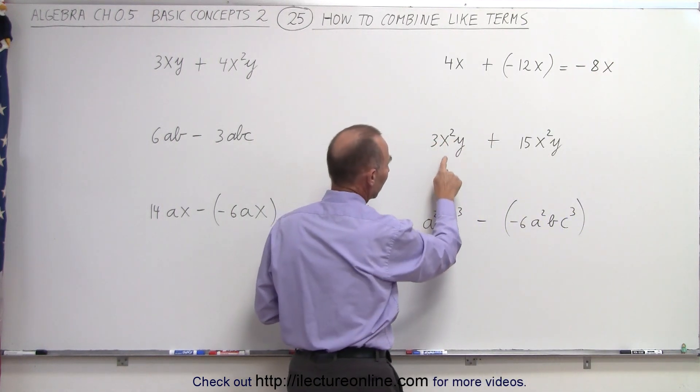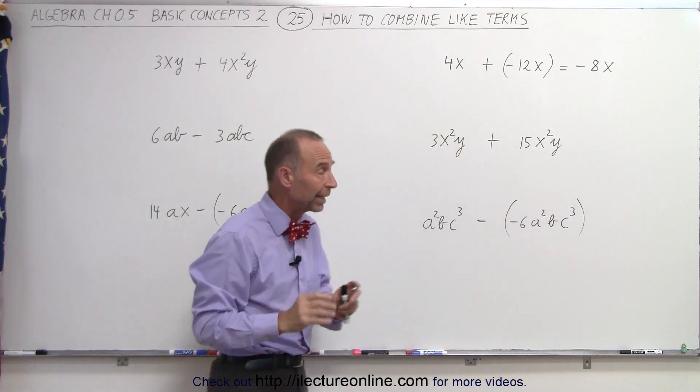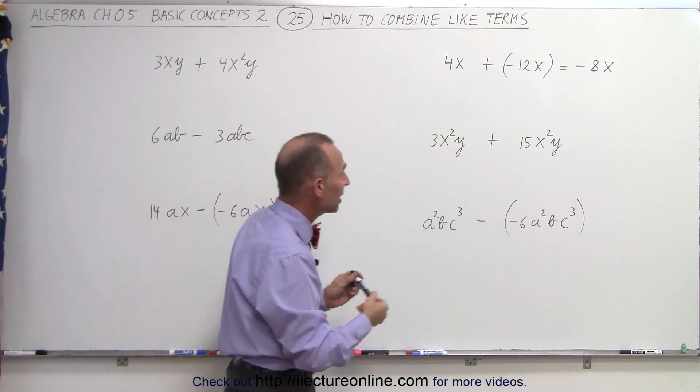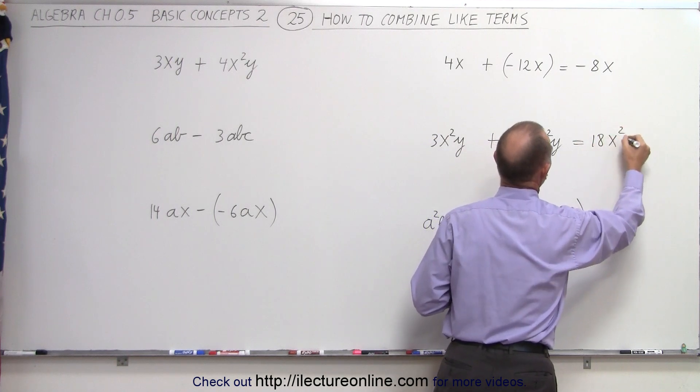Here again we verify: we have an x²y and an x²y, so therefore these are like terms and we can add them. 3 plus 15 gives us 18x²y.